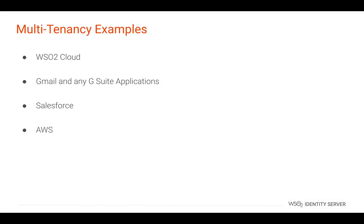Some examples of Multi-Tenancy are WSO2 Cloud, Gmail and any G Suite application, Salesforce, and AWS. For example, instead of deploying WSO2 Identity Server on your own machine and setting up databases yourself, you can simply register as a tenant in the WSO2 Identity Cloud and start using WSO2 Identity Server features.